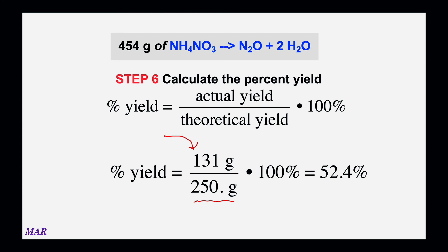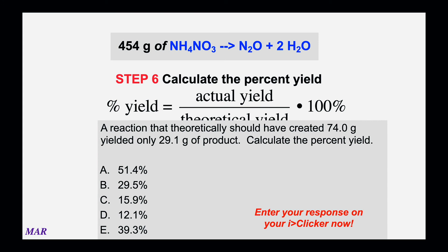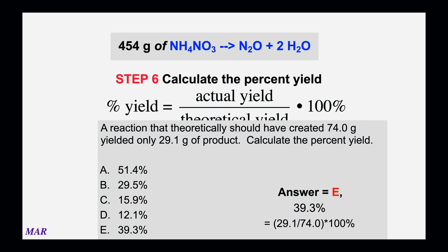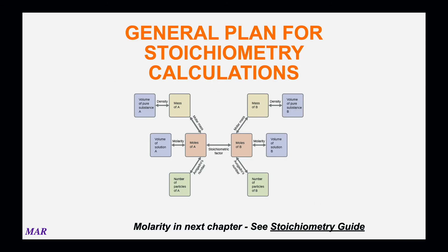Here's another example: a reaction should have created 74.0 grams, but we only ended up with 29.1 grams of product. Calculate the percent yield: actual divided by theoretical — 29.1 divided by 74.0 times 100 percent — equals 39.3 percent. Once in a while, percent yields are greater than 100 percent, which usually means the product is contaminated — often a wet sample adds water mass. You should never have a negative percent yield, and most of the time percent yields will be less than 100 percent.